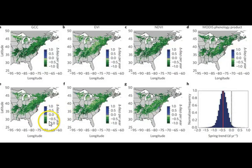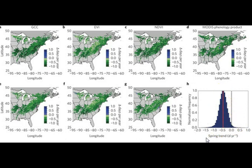Anything shown in green means spring is coming earlier, and blue would indicate spring is starting later. There's not much blue visible across any of the different approaches used to quantify the start of spring. In fact, if you map out a histogram of all those pixels, on average we're about a half day earlier for temperate forests across the eastern United States. This is a more complex example of change detection treating variables as a continuous response. For this introductory class, however, we're going to focus on just that simpler before-and-after change detection and how classifications change over time.